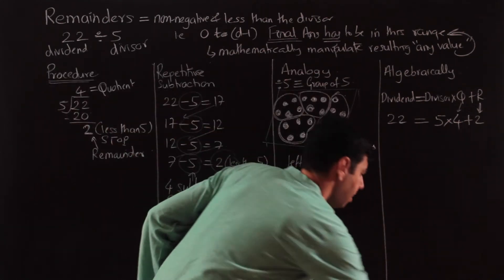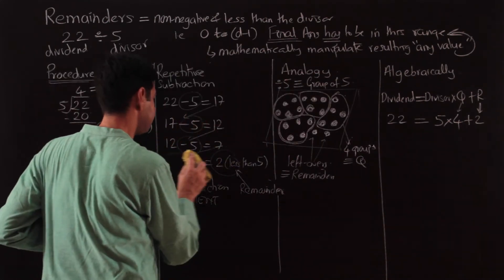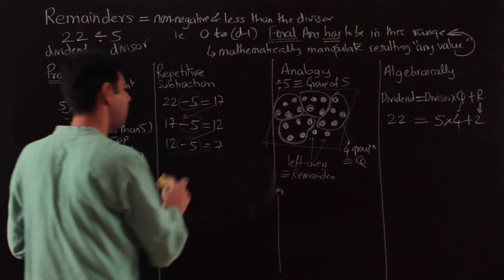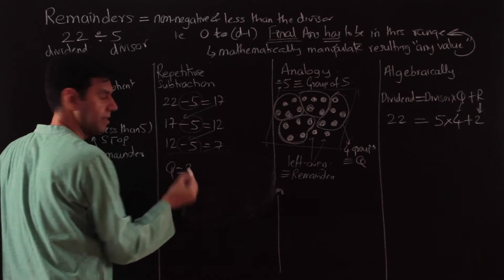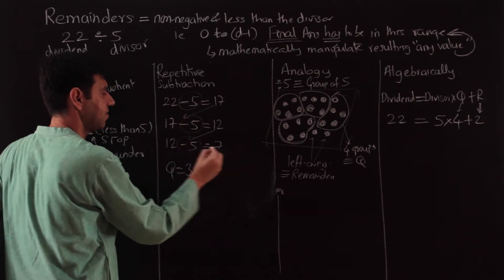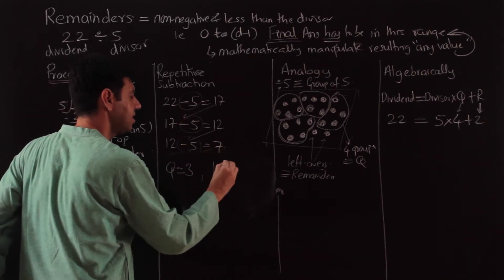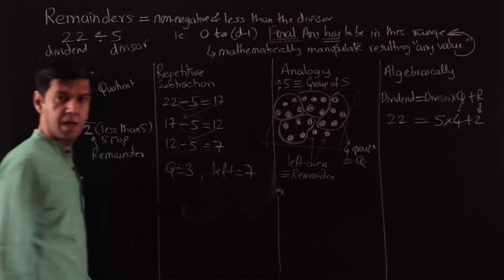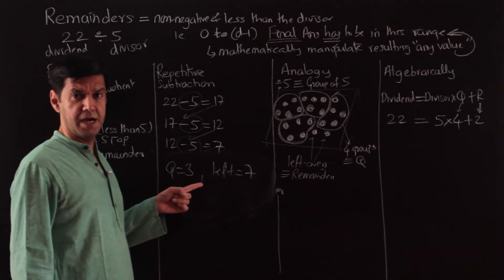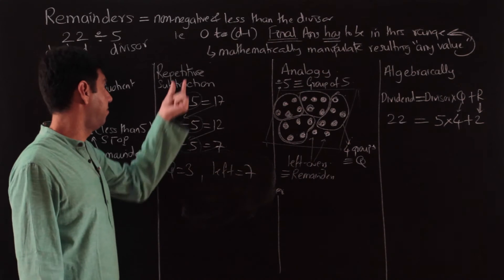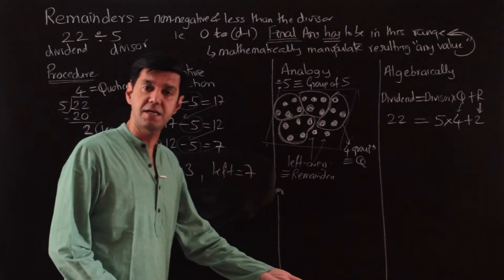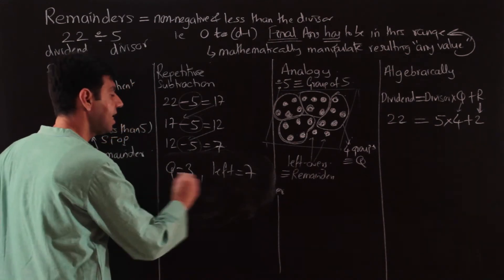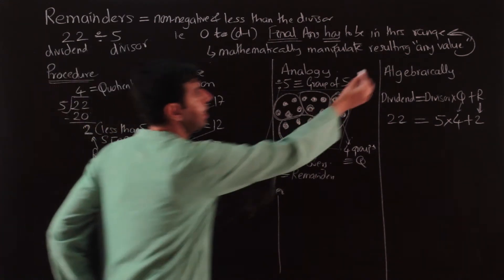What I mean by that: Look here when I was subtracting. Could I have just stopped over here? I could have said, I've subtracted it three times—minus 5, minus 5, minus 5—and I'm left with 7. There's nothing wrong as yet. You might say, you're left with 7. Can I again subtract 5? Yes.